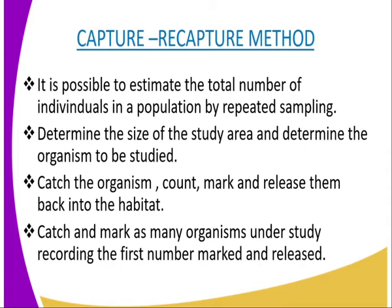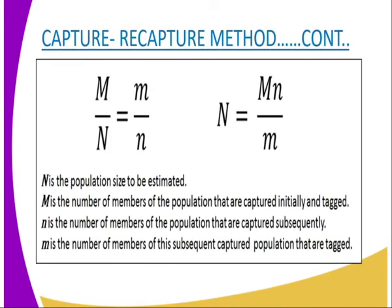After 24 hours, re-examine the experimental area and collect as many organisms as possible, including those that show the painted marks. Record the number of organisms collected. Here, capital M represents the number of members of the population that are captured initially and tagged. Capital N is the population size to be estimated — that is the total population. Small n represents the number of members of the population captured subsequently, and small m represents the number of those subsequently captured organisms that are tagged.